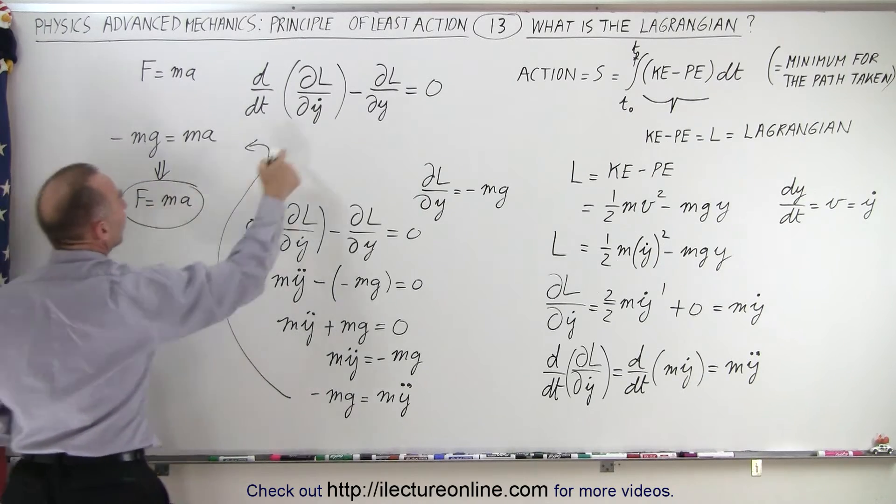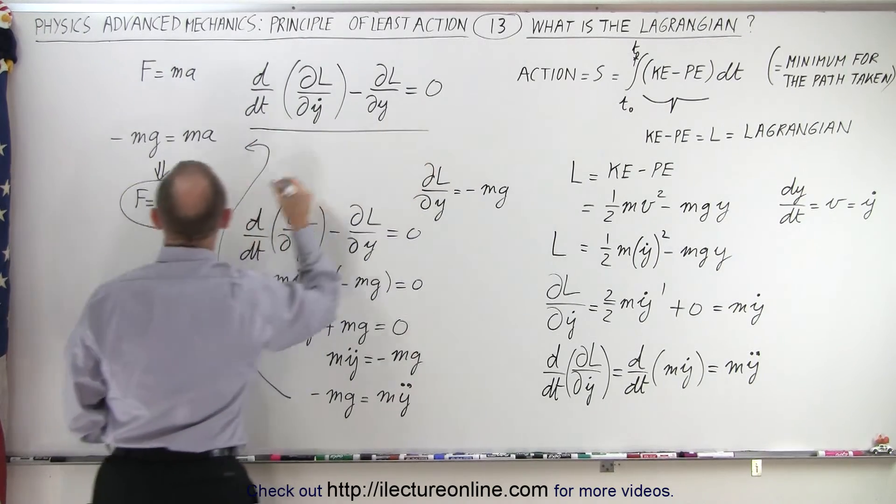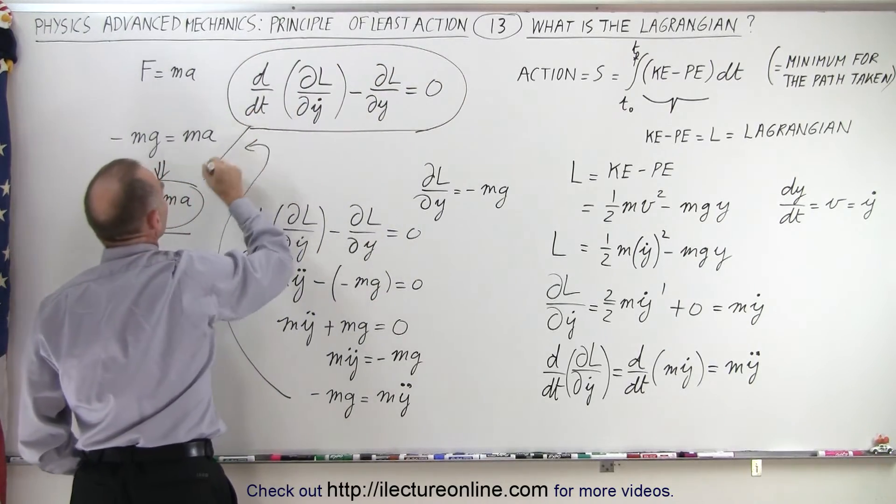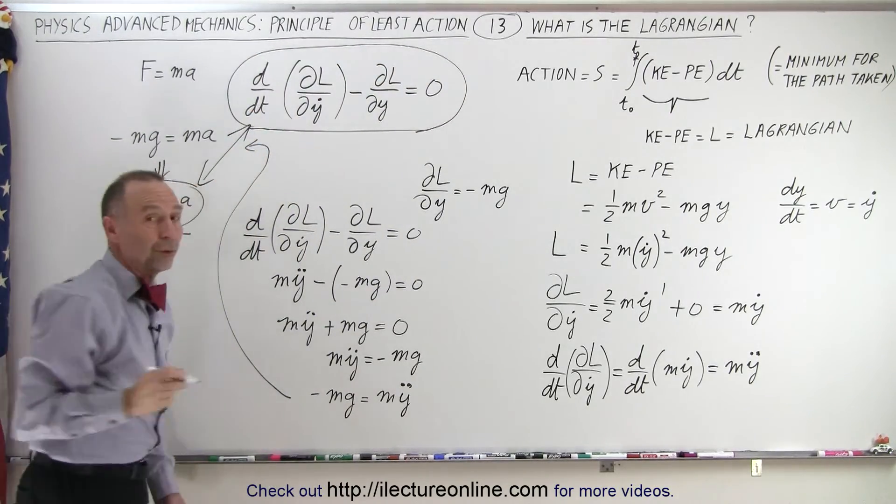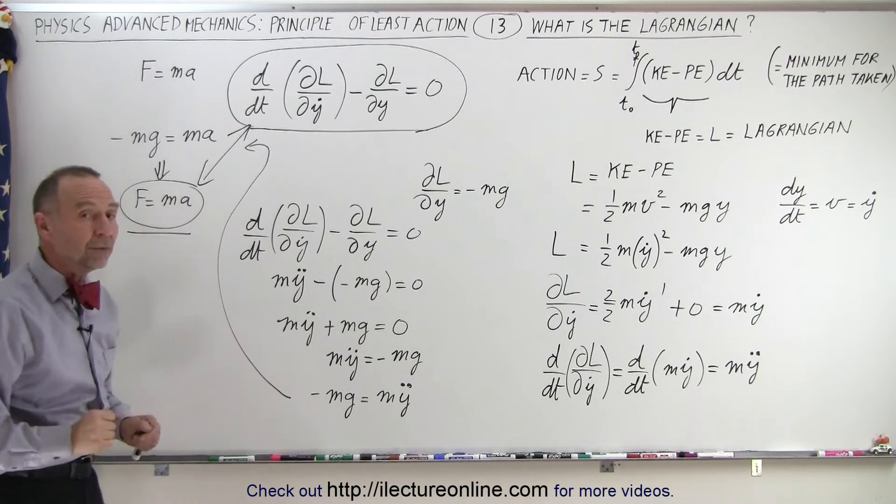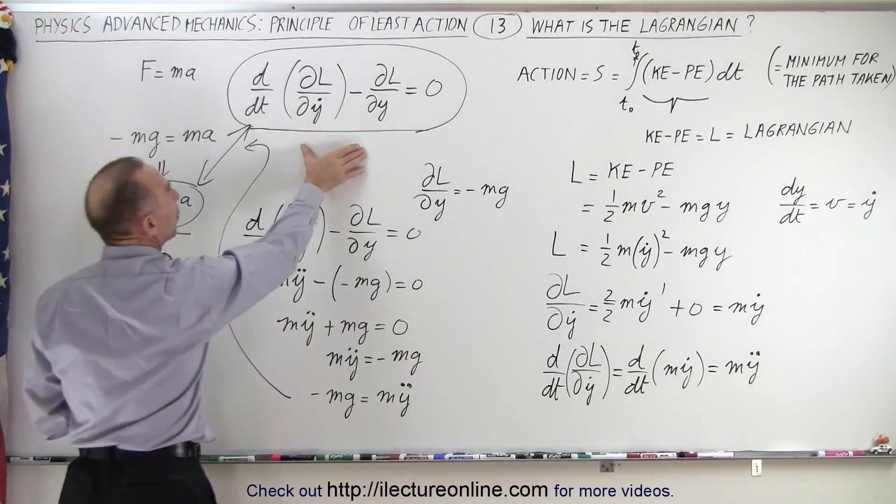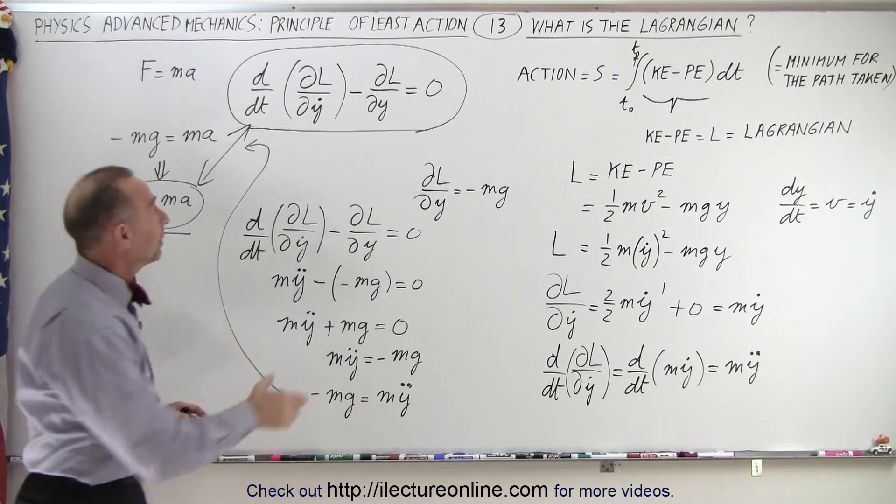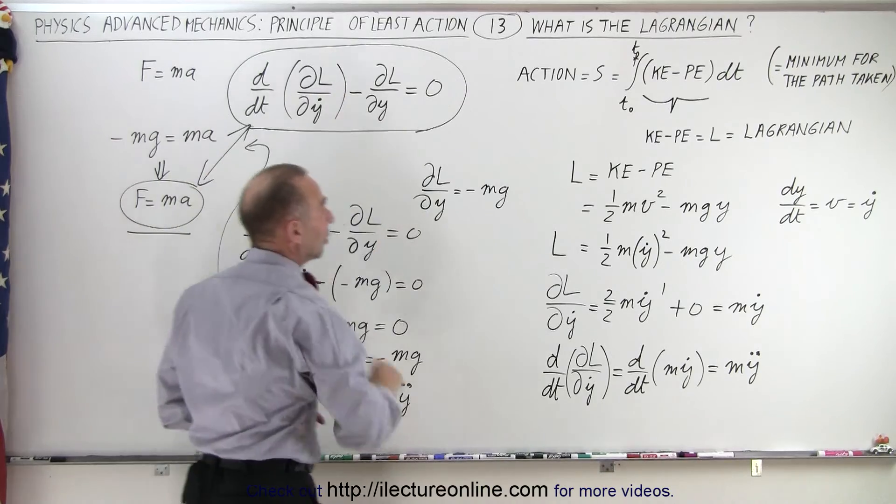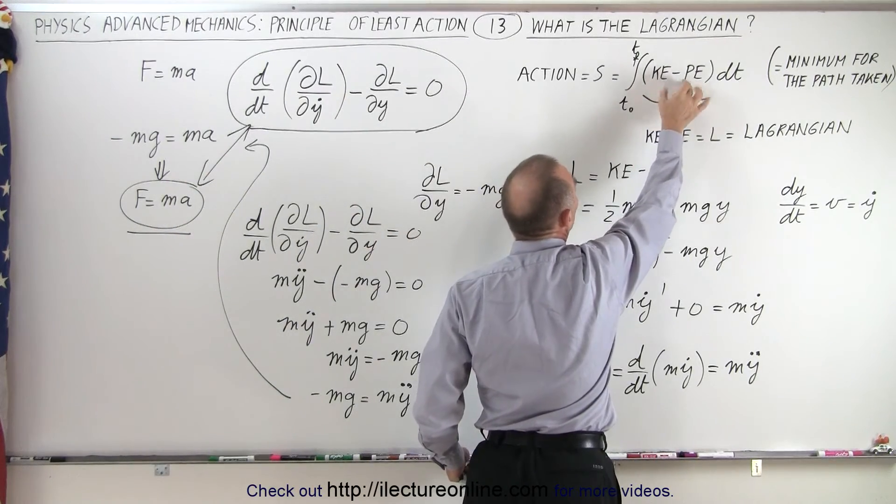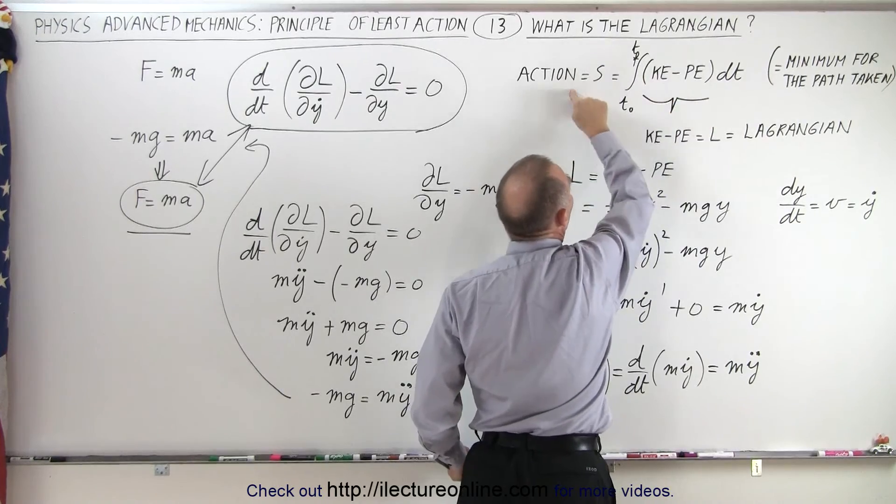So since this equation is the same as this equation, they're the same, and since we know that f equals m a is an equation we can use for all kinematics problems, therefore, this equation can be used for all kinematics problems. And where does that equation come from? It's based upon the Lagrangian, which is defined as the difference between the kinetic and potential energy inside our integral called the action.